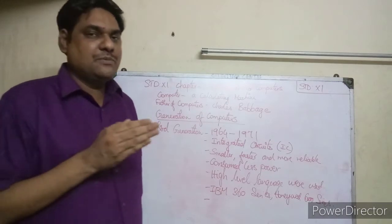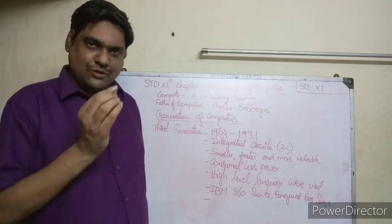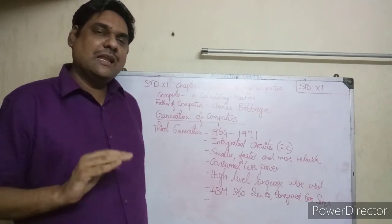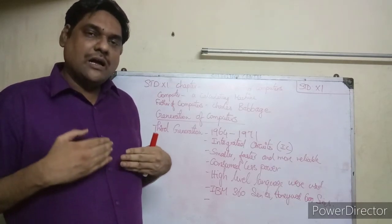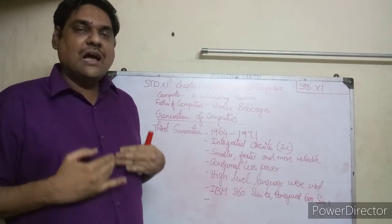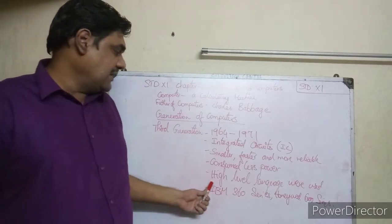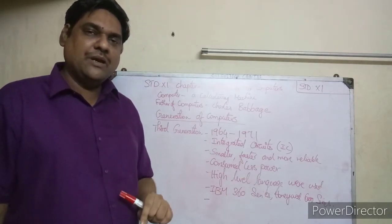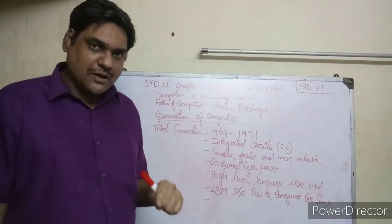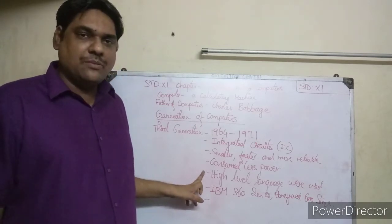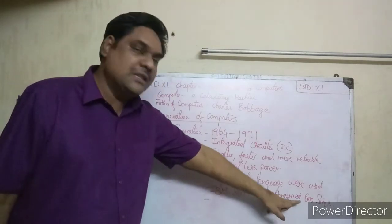The machine level language uses binary - only zeros and ones. High-level languages like C, C++, Java, and Python were developed so that programmers could write programs more easily, and these would be converted to machine level language for the computer to understand. Examples of third generation computers are IBM 360 series and Honeywell 6000 series.